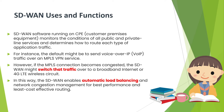SD-WAN is very useful because it is software running on the customer premise equipment — CPE. It can monitor the conditions of public and private line services and determine how to route each type of traffic or application traffic. CPE is customer premises equipment and it is located generally at the customer's location, so the software running on that device can monitor the network conditions and decide the routing logic.